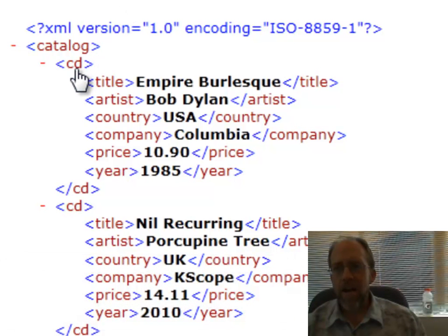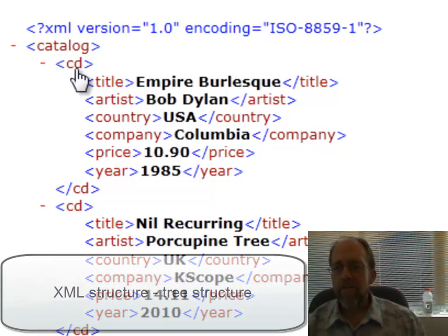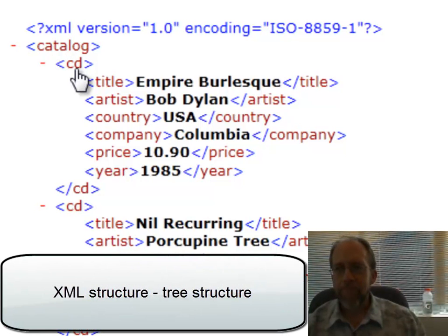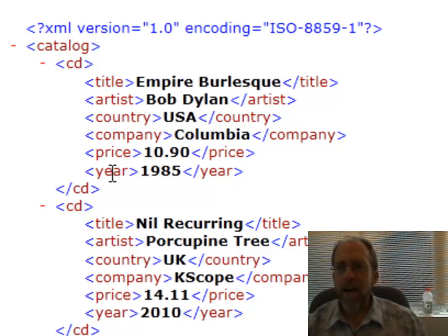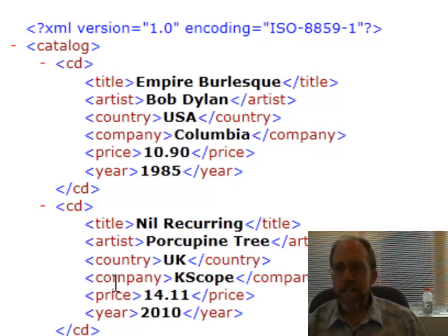Inside of this catalog you'll notice this is a tree structure. I have a tag that says CD, and inside that CD tag I have title, artist, country, company, price, and year. I could add other elements, but these are just the elements I have right now.